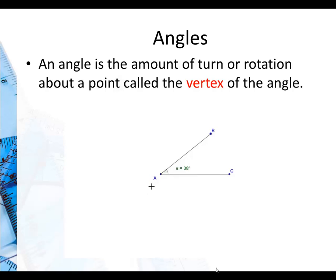An angle is the amount of turn or rotation about a point called the vertex. In this case, this point A here is the vertex. This is the measure of how much turn.